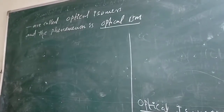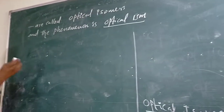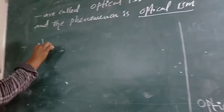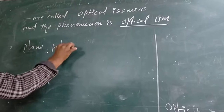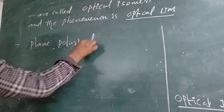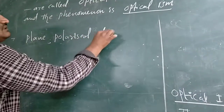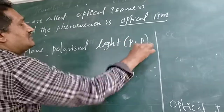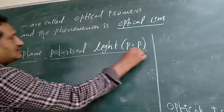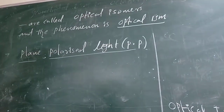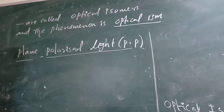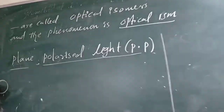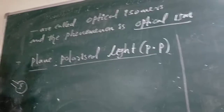Now we will discuss plane polarized light, also called PP light. You know that ordinary light — this is the ordinary light — travels in all directions.